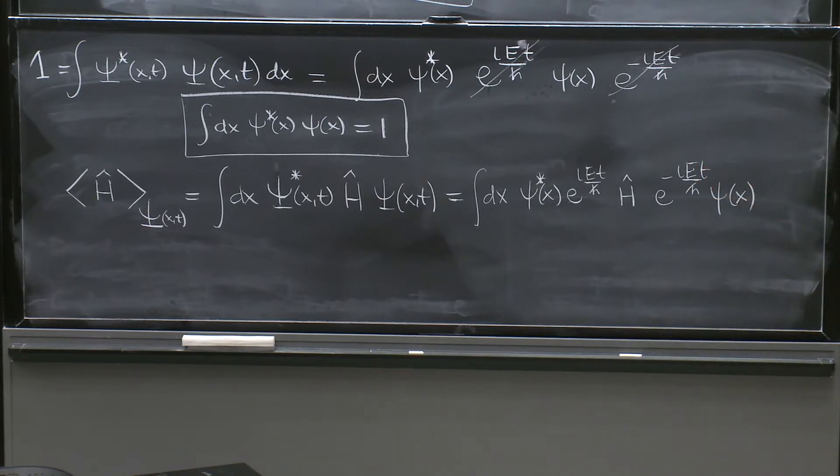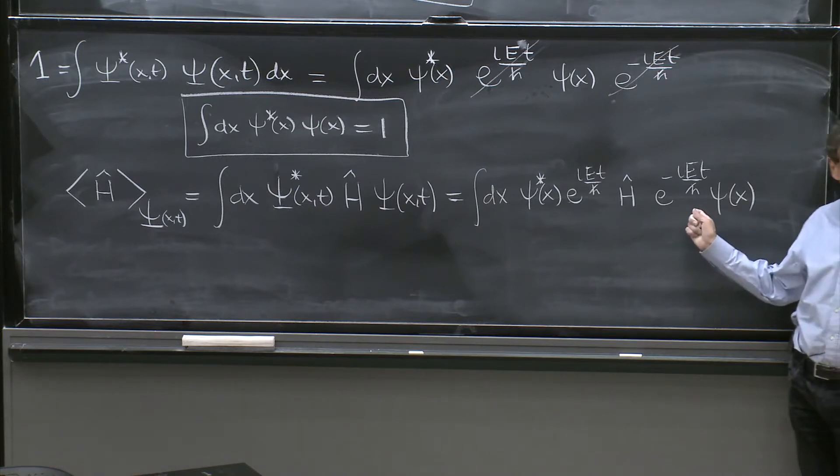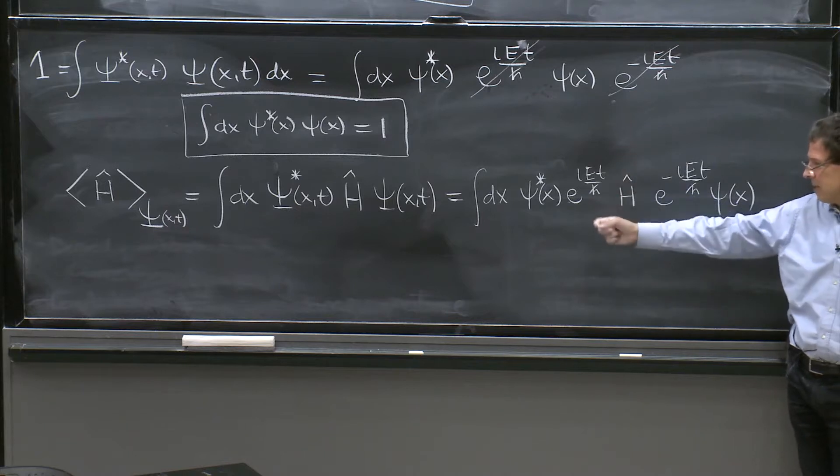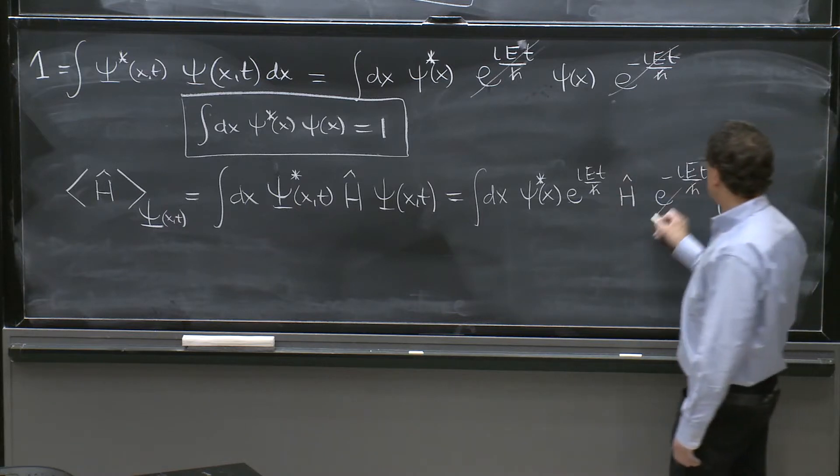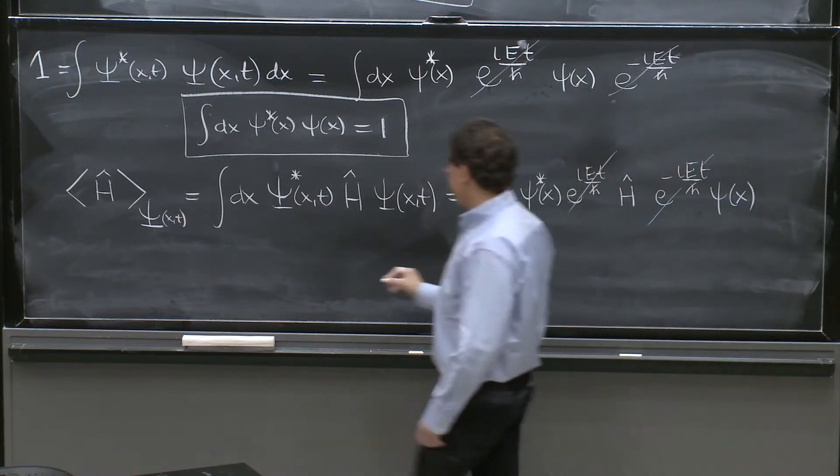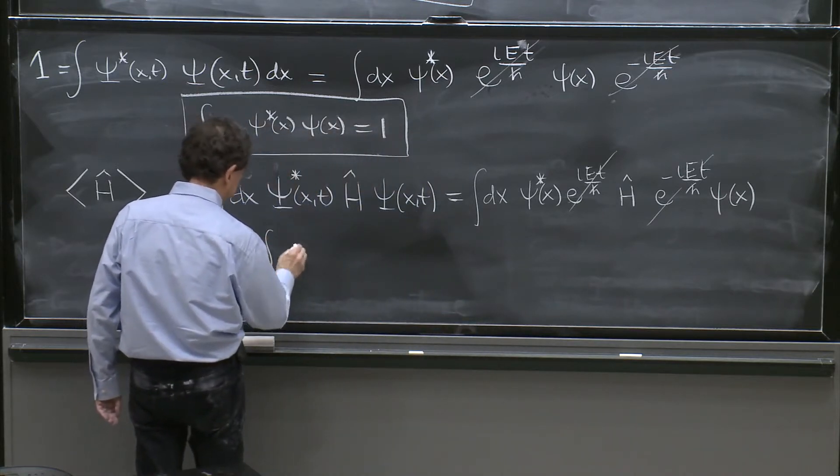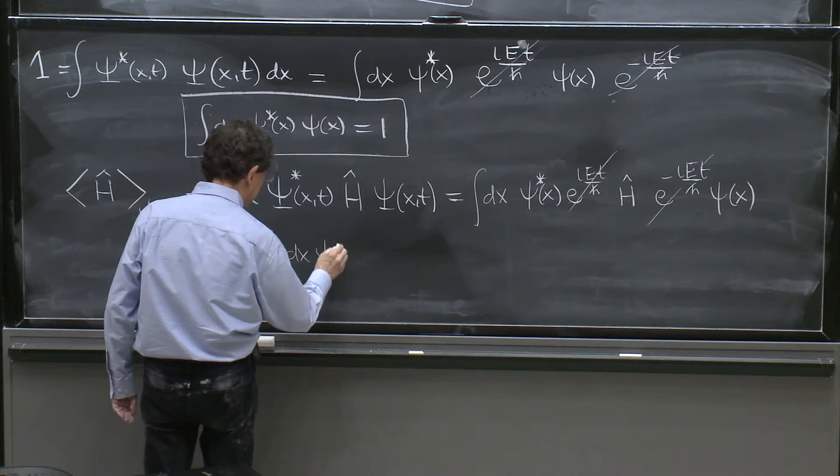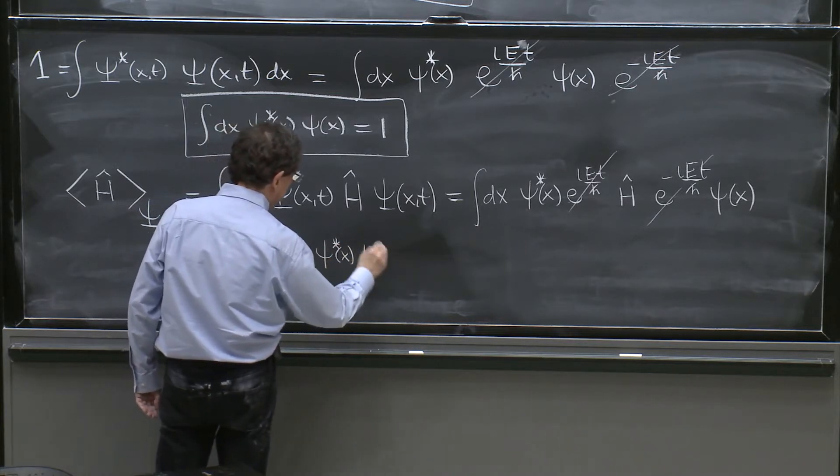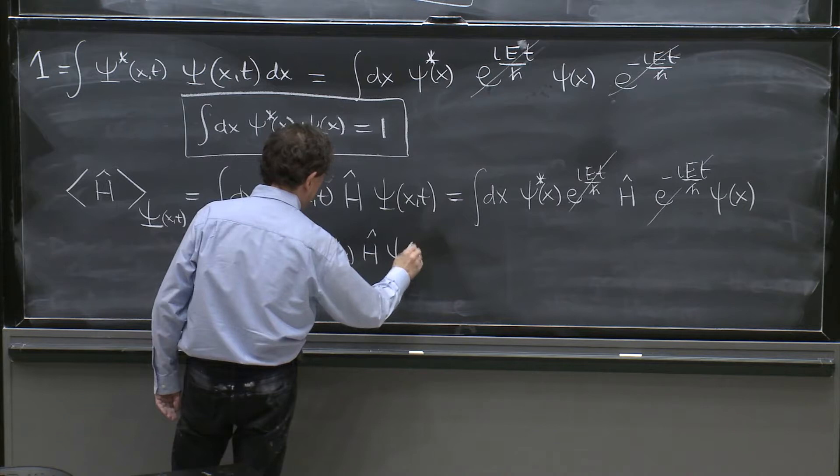And H hat couldn't care less about the time dependence. That exponential is irrelevant to H hat. That exponential of time can be moved across and canceled with this one. And therefore, you get that this is equal to dx psi star of x, H hat psi of x.